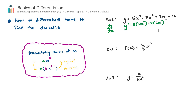For the third term, 3x: there's a hidden power of one on x that's unwritten. We keep the three at the front, bring the one down, and subtract one from the power — so the power goes to zero. Finally, the 12 is just a constant, and whenever we differentiate a constant it goes to zero, so we write plus zero.